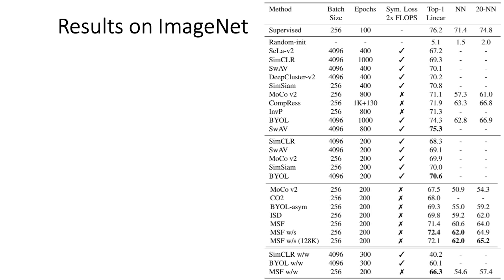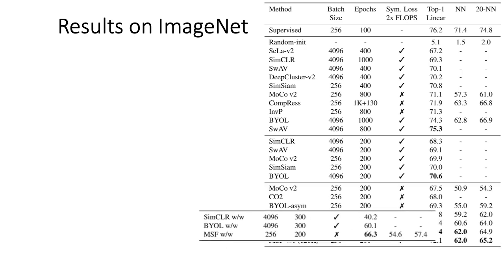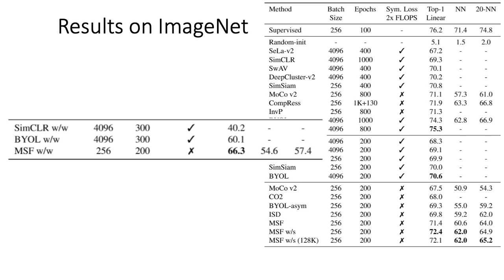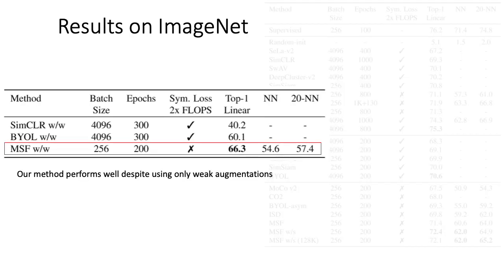Our method with 128K still outperforms other SOTA methods. For a fair comparison we only compared against methods with a similar compute budget; here we show the comparison without this constraint. Since our method does grouping of different images, we hypothesize it is less reliant on strong augmentations. Testing this by using only weak augmentation for both target and query, we find that despite significantly reduced computational budget, our method outperforms other SOTA methods by a large margin, showing it can be applied without much augmentation engineering — beneficial in domains like medical imaging where augmenting images is not obvious.